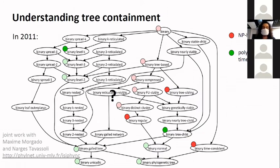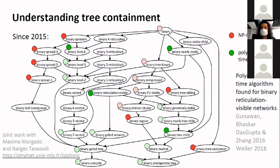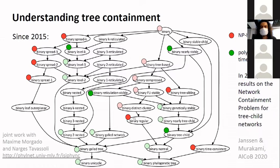This was useful for the tree containment problem to understand how it worked. In 2011, after the first publications on it, we already had some results about some classes of networks where it was difficult to solve — in red — and some where it was easy. We started some work on this with colleagues in Marne-la-Vallée and in Singapore, Lu Xin Zhang and Andres Gunawan, and managed to obtain practical algorithms on other classes. They obtained an algorithm on an open problem on binary reticulation-visible networks in 2016, which was improved two years later by Matthias Weller to obtain a linear time algorithm.